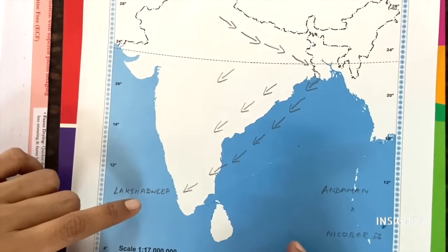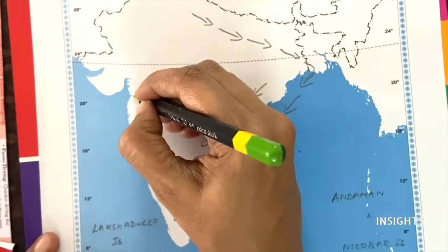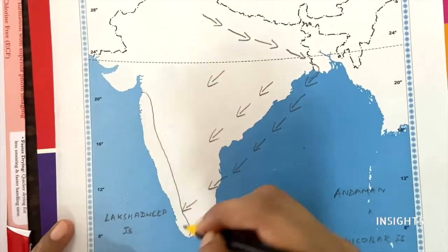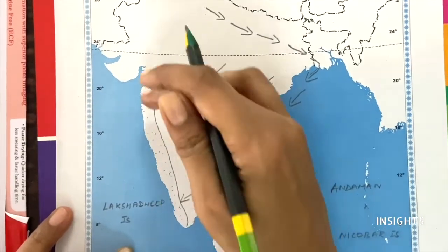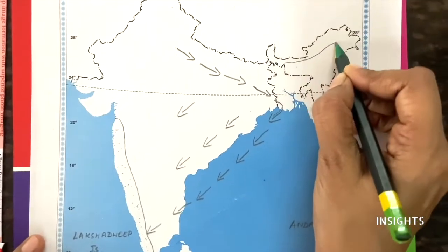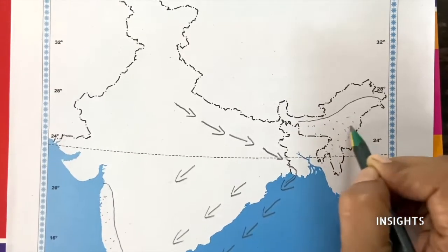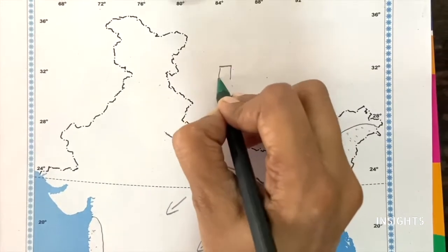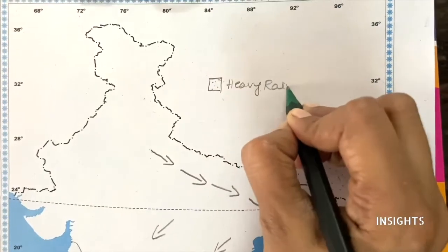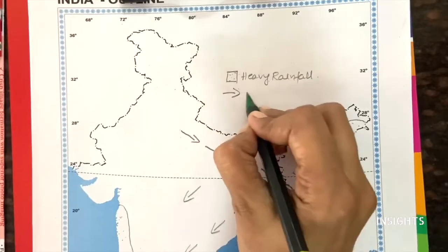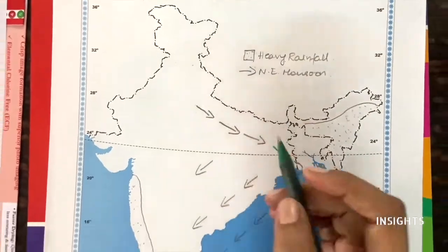Next, the area of very heavy rainfall. Areas of heavy rainfall — it is the western coast. We marked that in the southwest monsoon, remember? This entire area gets heavy rainfall — the western coastal plain. Apart from that, you have the northeastern area — this entire area also gets heavy rainfall. Just put a box and write 'heavy rainfall.' And mention that this is from the northeast monsoon.